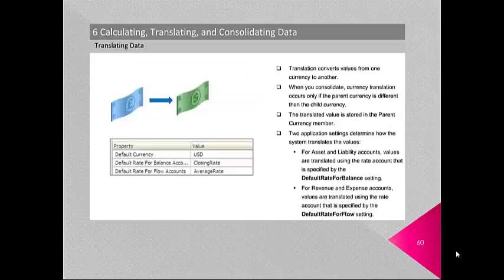Translation converts values from one currency to another. When you consolidate, currency translation occurs only if the parent currency is different from the child currency. The translated value is stored in the parent currency member. Two application settings determine how the system translates values. For asset and liability accounts, values are translated using the rate account specified by the default rate for balance setting.